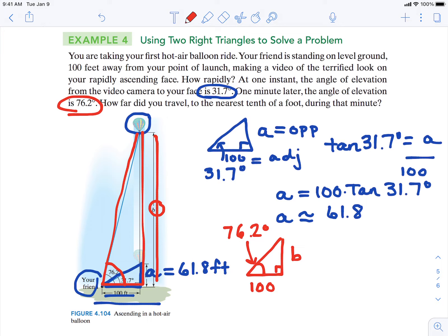So we're going to find height B. Same trig function. Tangent. Opposite is B. Adjacent is 100. And now we multiply both sides by 100.